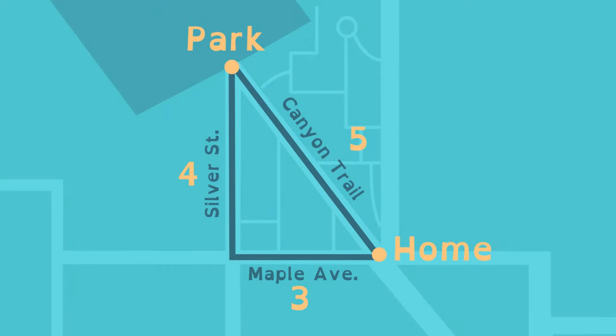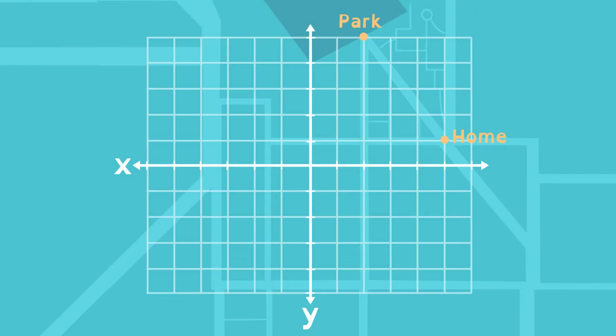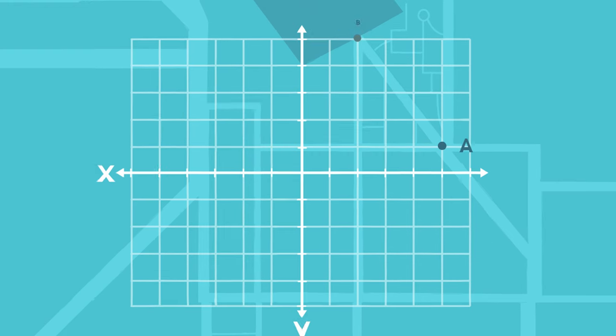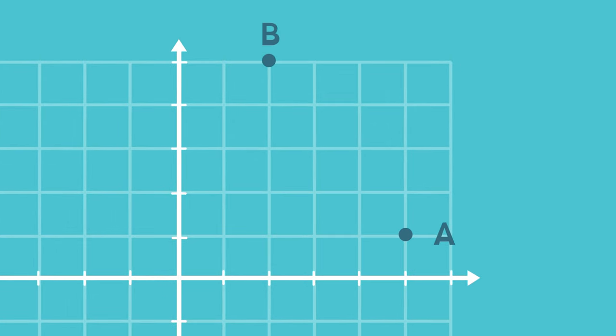What if Lucy doesn't know the lengths of Maple Avenue and Silver Street? A coordinate plane can help. Lucy's house and the park can be points on the plane, one at 5-1 and the other at 2-5.